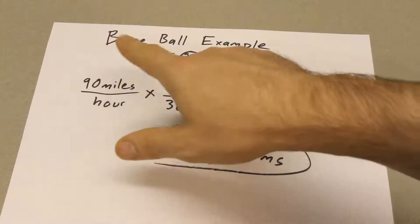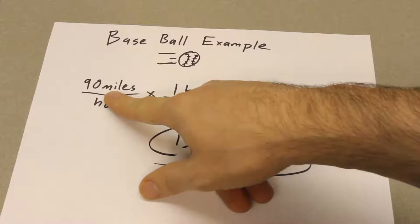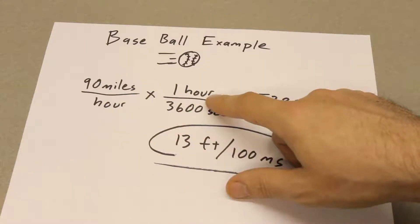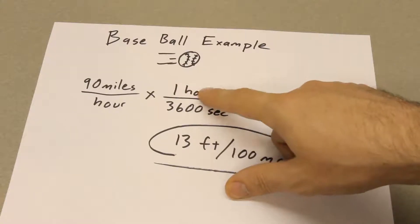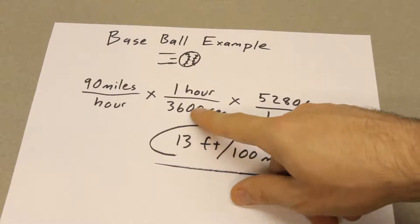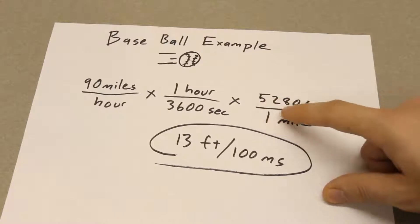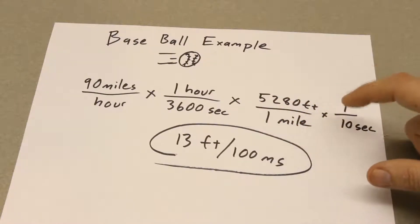Now I want to convert that into feet per second. So I'm going to multiply that by 1 hour over 3,600 seconds. Now we're in miles per second. And then I'm going to multiply that by 5,280 feet per mile to get it into feet per second.